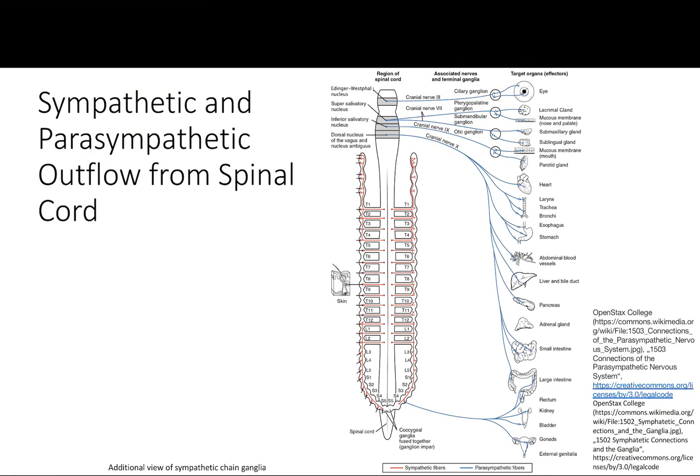Looking at the parasympathetics first, a lot of the innervation to the body comes from your cranial nerves, and we've covered these so you already know most of them. Remember what cranial nerve 3 did? That went to the eye and caused miosis — it made the pupil constrict.